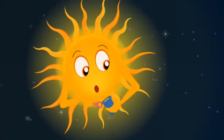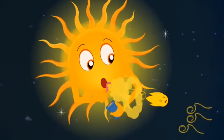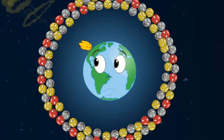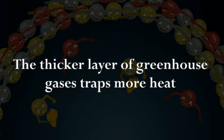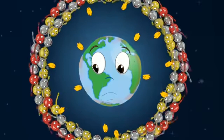We know that the sun's rays strike the earth, some should be absorbed by the earth, some should be reflected back, and a few should be trapped. The picture is showing how the sun rays are striking the earth. The thicker layer of greenhouse gases traps more heat.